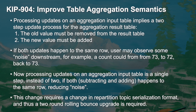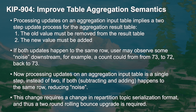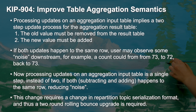KIP 904 seeks to remove this noise by making aggregation happen in one step. This feature is on by default and cannot be disabled. If your topology contains a KTable aggregation operator, you'll need to do a two-round rolling bounce upgrade.